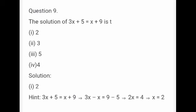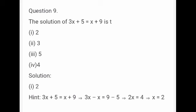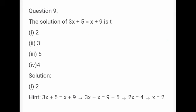Next, question number 9. The solution of 3x plus 5 equal to x plus 9 is dash. First, shift x to the left hand side and constant numbers to the right hand side. 3x minus x equal to 9 minus 5. 2x equal to 4. When we cancel 4 and 2, we get the answer 2. Therefore, the solution of this given equation is 2.